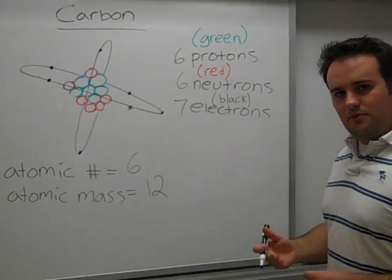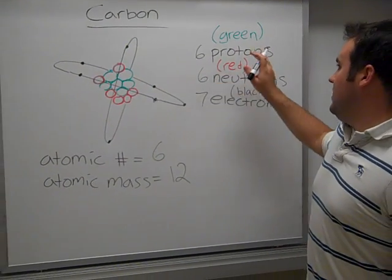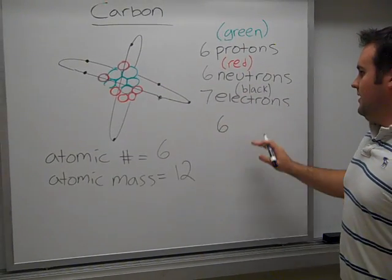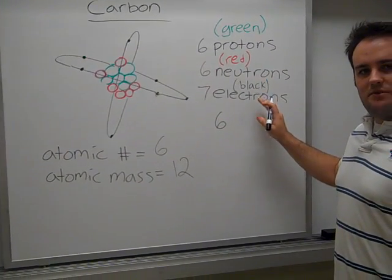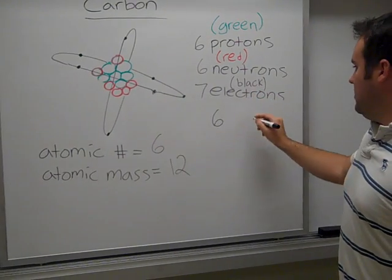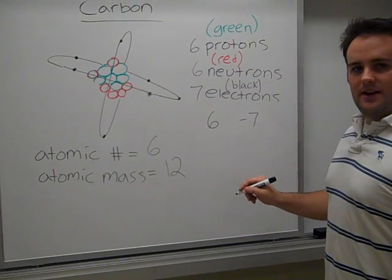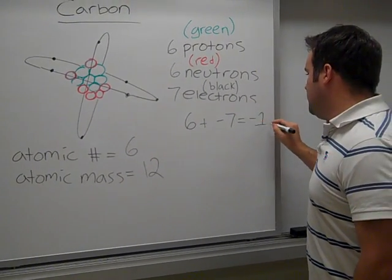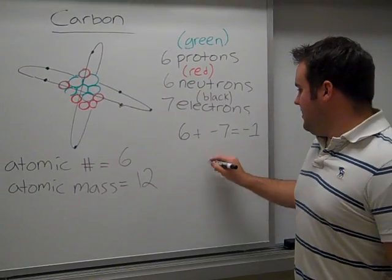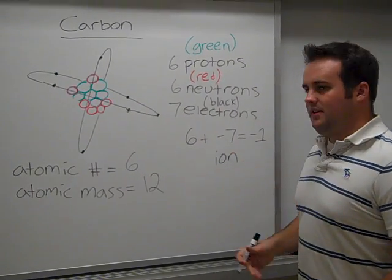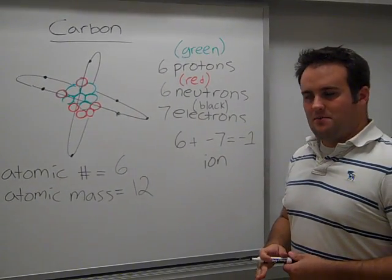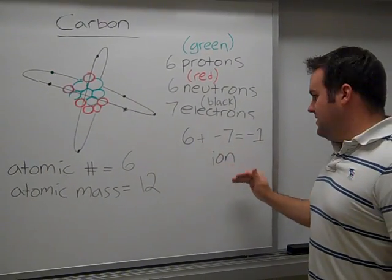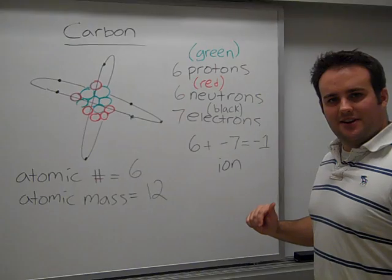So using that same logic with the positive ion, we have six protons with a positive charge, so we have positive six. The electrons, you have seven particles with a negative charge. So we have an overall charge of negative seven. You add those two together, and you get an overall charge of negative one. This is still an ion. We changed the number of electrons. But now that we added more negative charge to this atom, the negative charge of the electrons are going to take over.